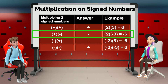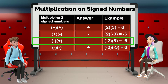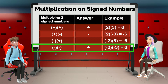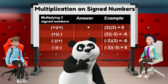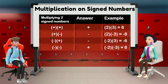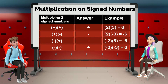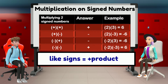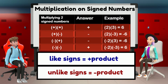Next case: a positive number multiplied by a negative number results in a negative product. Third case: a negative number multiplied by a positive number also gives us a negative product. And lastly, a negative number multiplied by another negative number results in a positive answer. We can simply say that multiplying two numbers with like signs gives us a positive product, while multiplying two numbers with unlike or different signs gives us a negative product.